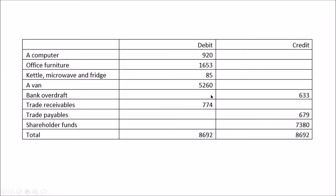These are the assets, these are the liabilities to non-shareholders, and these are the liabilities to shareholders. It really comes down to debits and credits — what's the positive money and what's the negative money to the organisation? A bank overdraft is money going out to the bank, so it's negative money and therefore a credit. HMRC will either be money owing to HMRC (a credit) or money owed by HMRC to the company (a debit). Watch for bank overdrafts, VAT liability or VAT asset, and missing shareholders' funds.